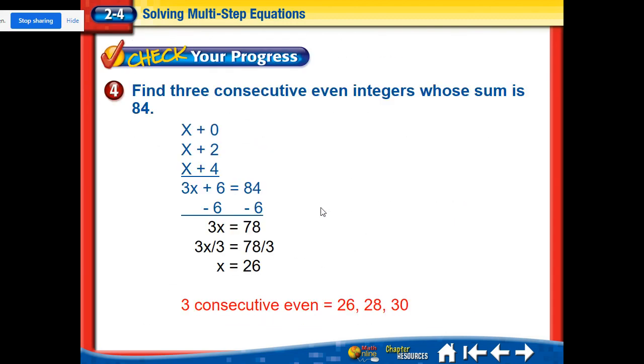All right, let's try one more. Find three consecutive integers whose sum is 84. So x plus 0. They're even integers. So I got the x plus 0, the x plus 2, and the x plus 4. There's three of them in a row. If there was four, I would do an x plus 6 next. How many x's do I have? I got three of them. Numbers here add up to be 6. So it's 3x plus 6 equals 84. Subtract 6. 3x equals 78. Divide by 3. And x equals 26. Again, that's the first one. So the next one is 28 and then 30.